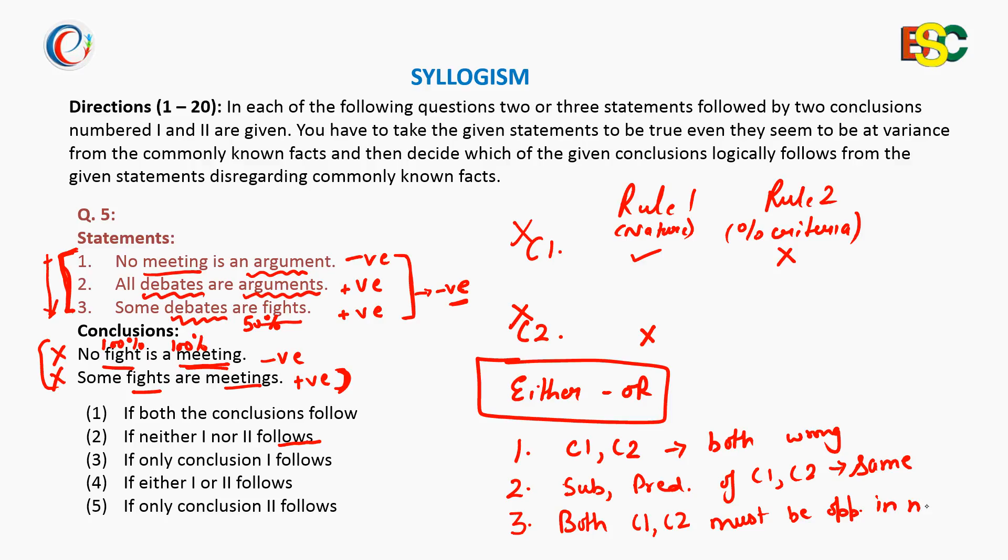That means if one is positive, then the other one must be negative. And here, conclusion 2 is positive and conclusion 1 is negative. So all the three rules of either or are passed and thus the answer is either 1 or either 2 follows.